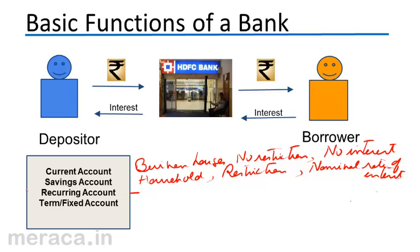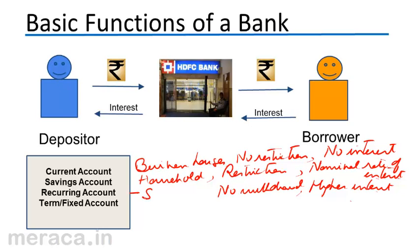The recurring deposit is a savings account wherein a fixed sum of money is put into the deposit every month or every quarter for a period of one or more years. This carries a higher rate of interest. However, there is absolutely no withdrawal until the expiry of the term of the deposit. This is like a savings game.